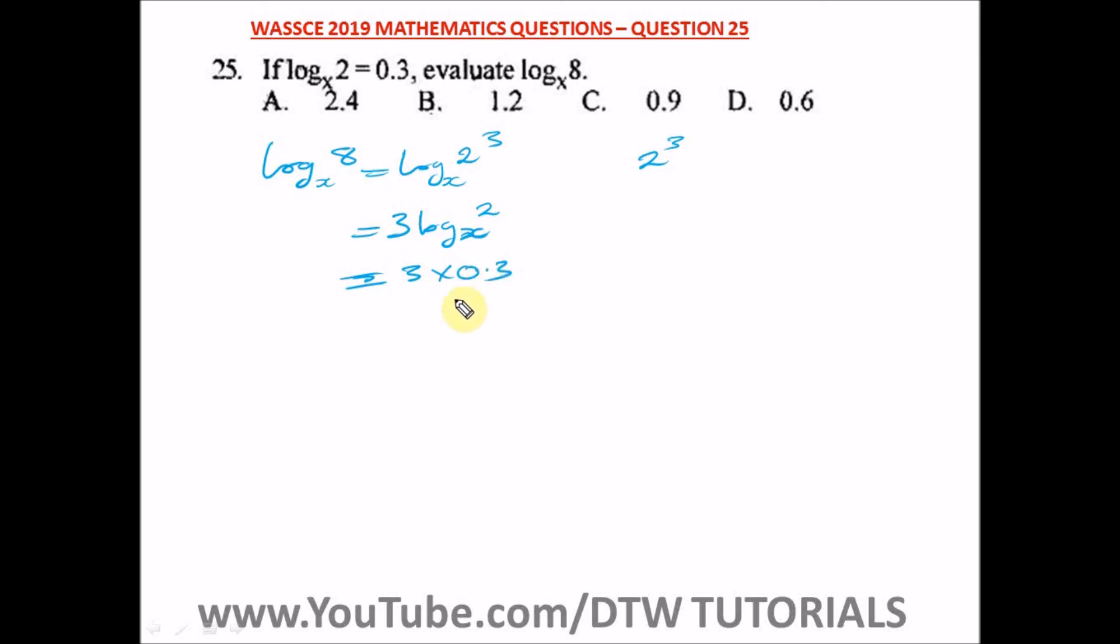What is 3 times 0.3? That will give us 0.9. So this is our answer and our right option here is option C.